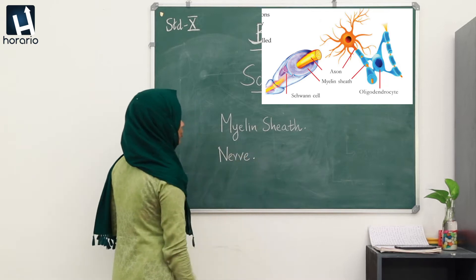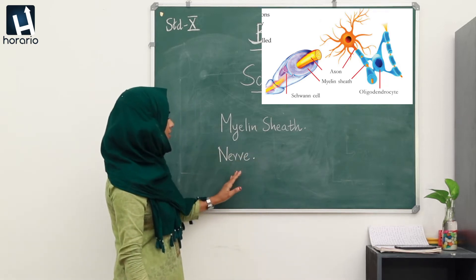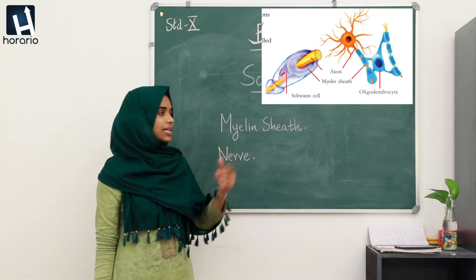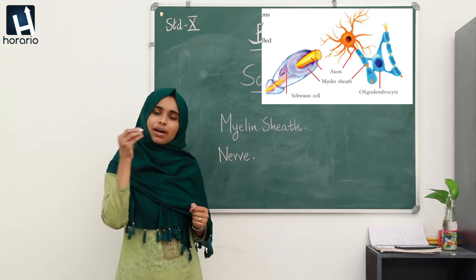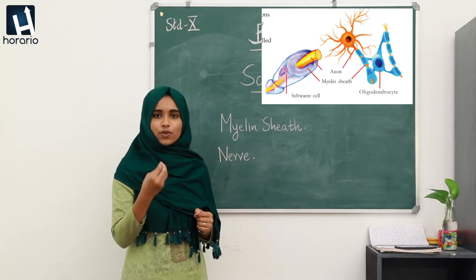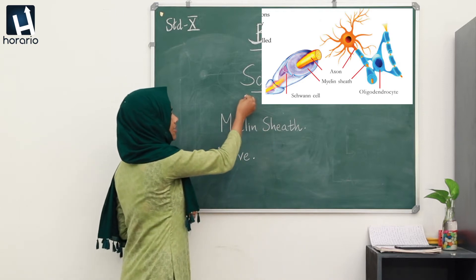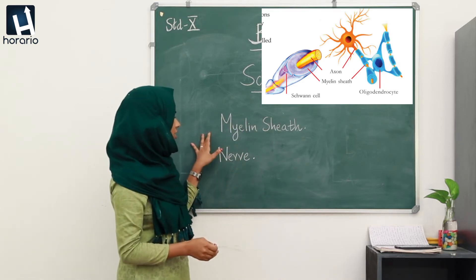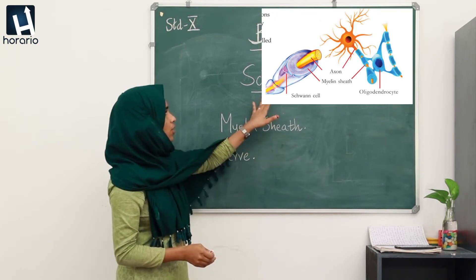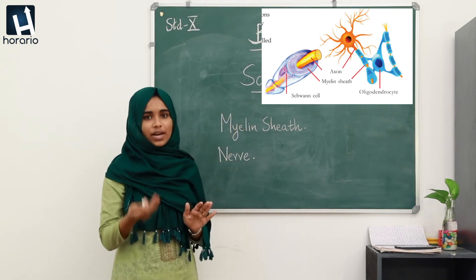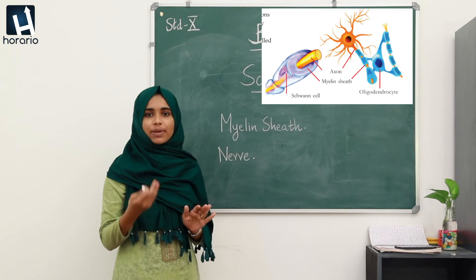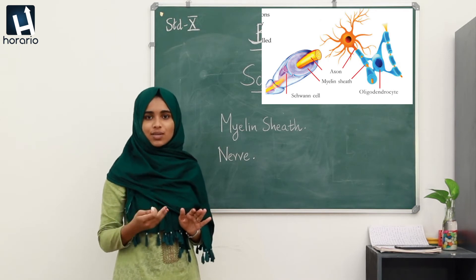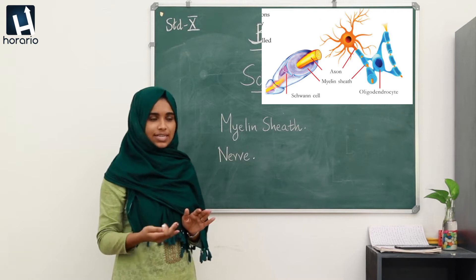It is the bundle of neurons, and the nerves are also encircled by the myelin sheath. The myelin sheath in the nerves is formed of specialized cells called Schwann cells. The myelin sheath in the brain and the spinal cord are formed of specialized cells called oligodendrocytes.